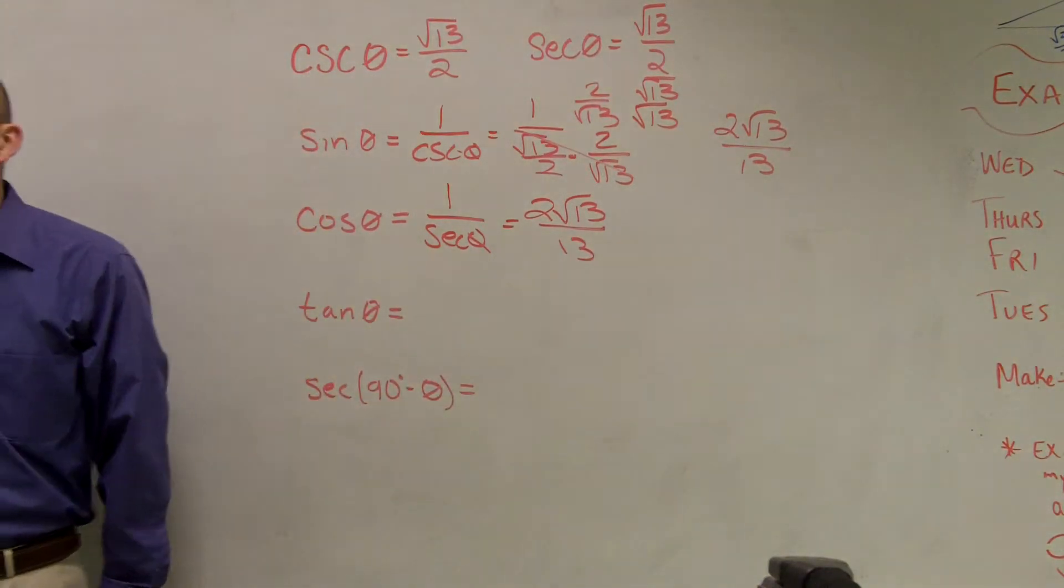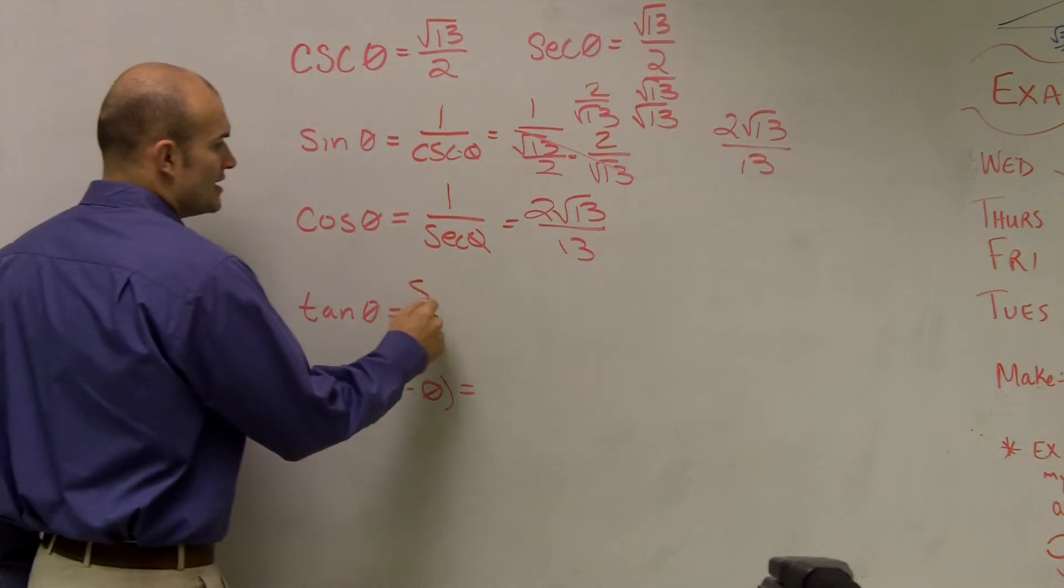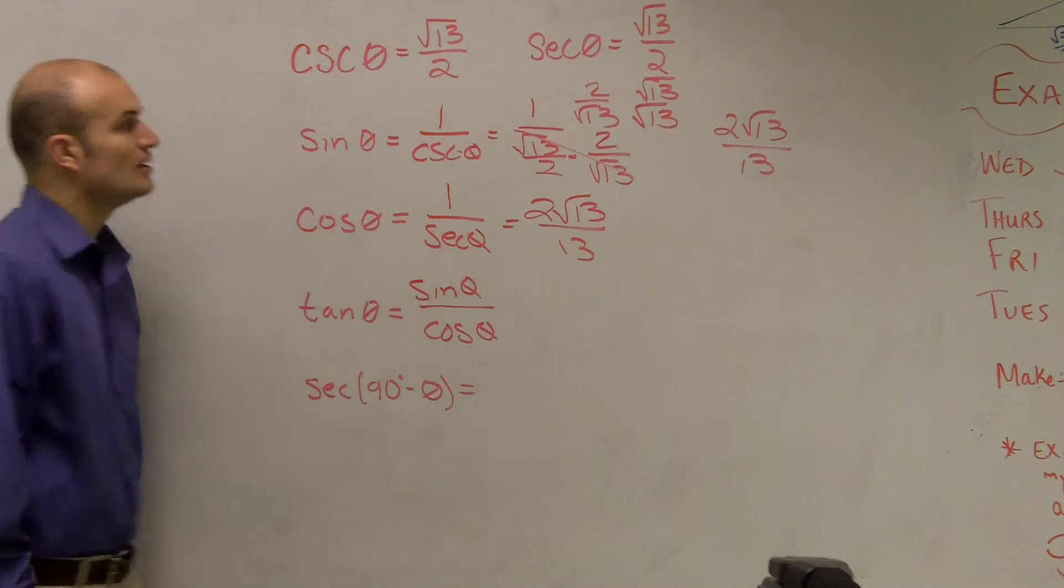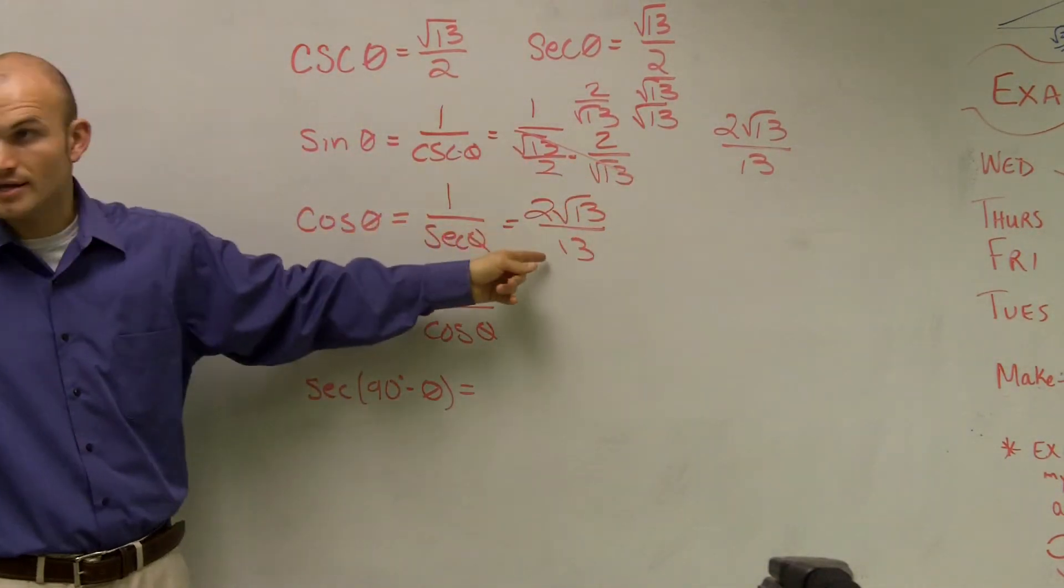Now, what's another thing you need to know about tangent? Well, you also need to know that tangent is the same thing as sine of theta divided by cosine of theta. Well, I know what my sine is, and I know what my cosine is, right?